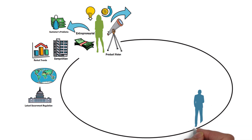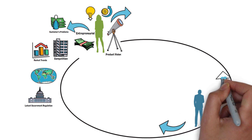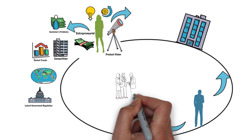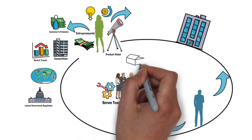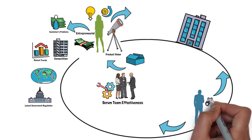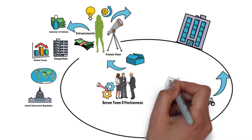Being entrepreneurial requires looking outwards at the problems customers are facing, understanding current market trends and the competition landscape, and in some industries being aware of global issues and the latest government regulations. The Product Owner is an outward-looking individual, finding opportunities outside of the company to maximize the value of the product. In contrast, the Scrum Master focuses on looking inside the company and finding opportunities to improve the Scrum team's effectiveness.